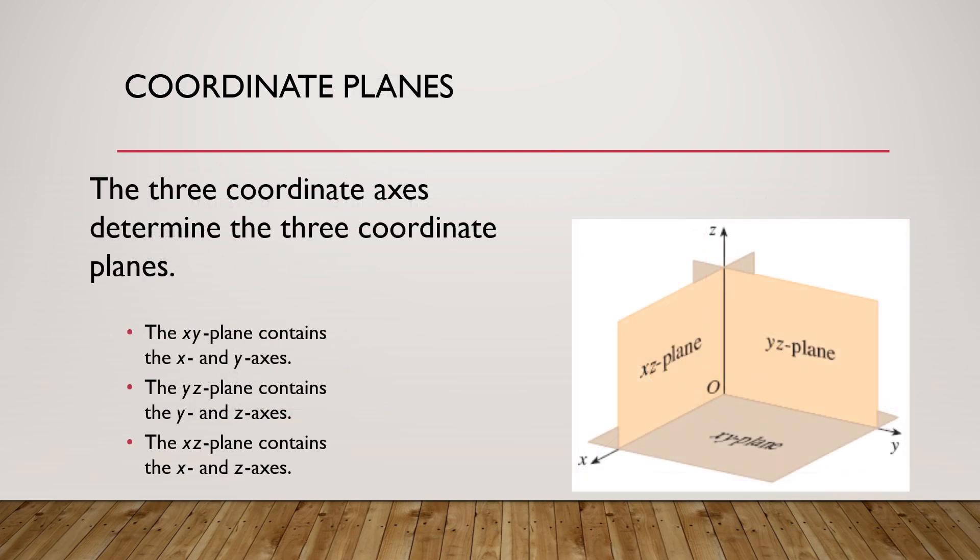The three coordinate system determines the three coordinate planes. Where x and y intercept, that is called the x-y plane. Where x and z intercept, that is called the x-z plane. Where y and z intercept, that is called the y-z plane. So we have three planes and three coordinates.